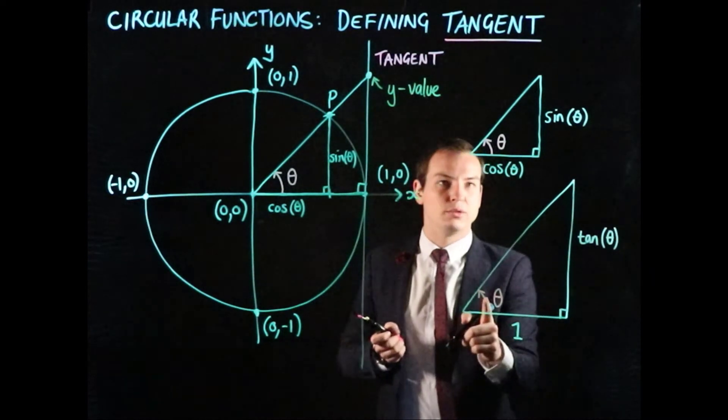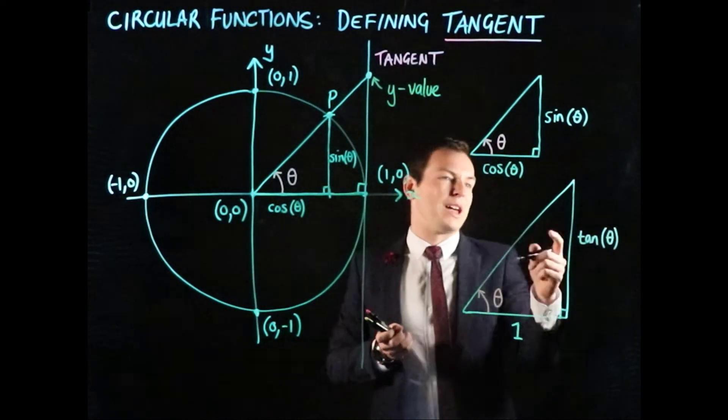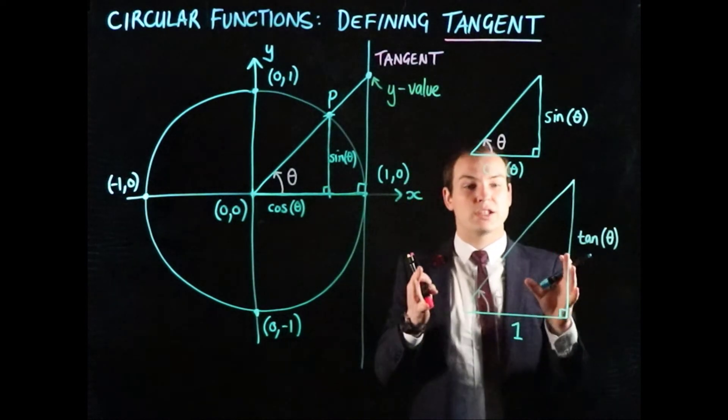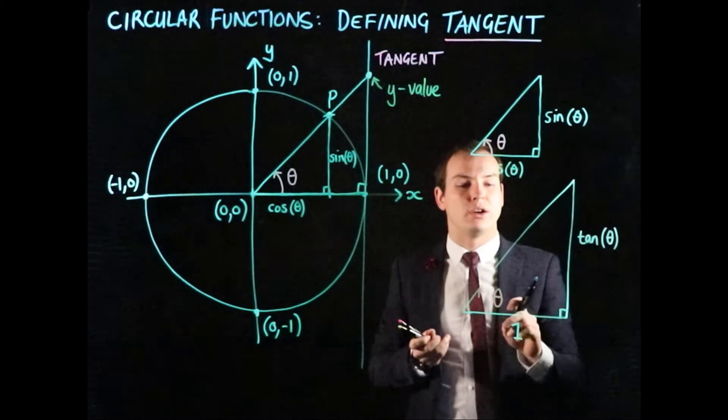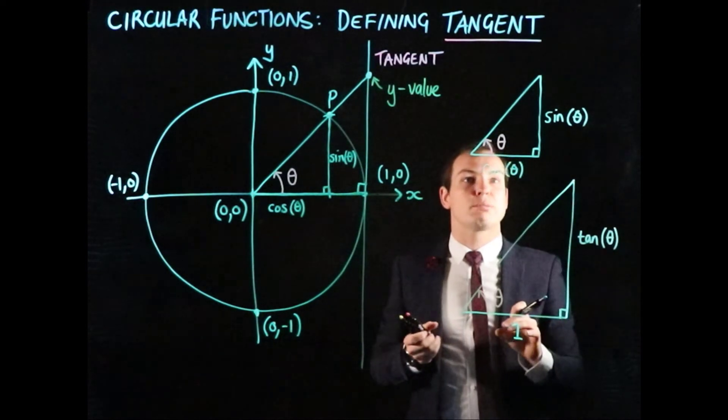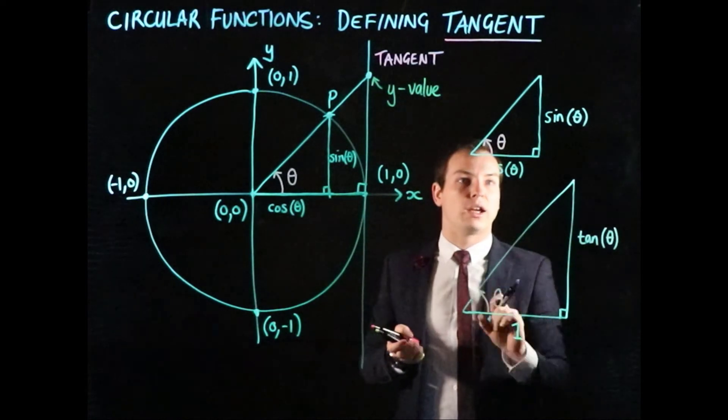Because this angle equals that angle, and we have right angles here and here, the third angles in both triangles must be equal. This means these two triangles are similar—all three angles are the same. So there are ratios between the side lengths of these triangles.